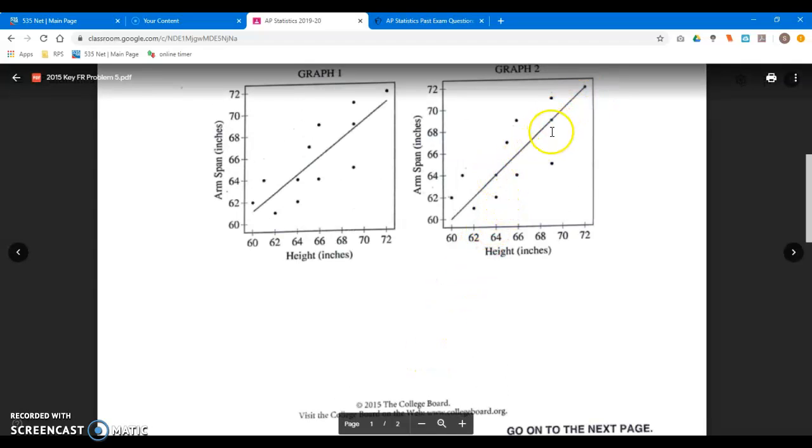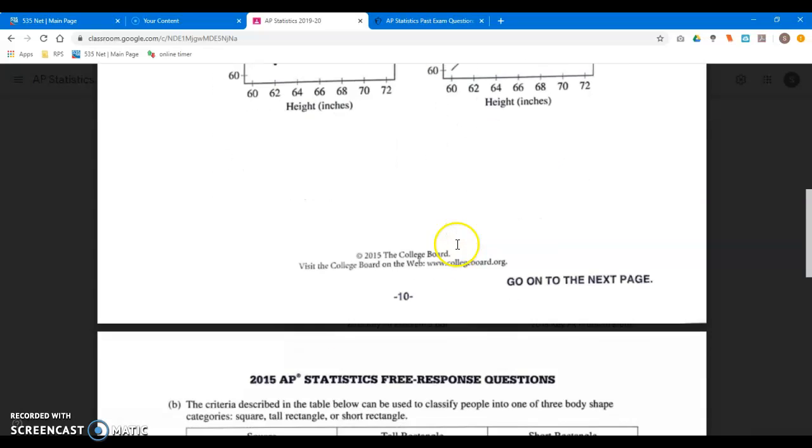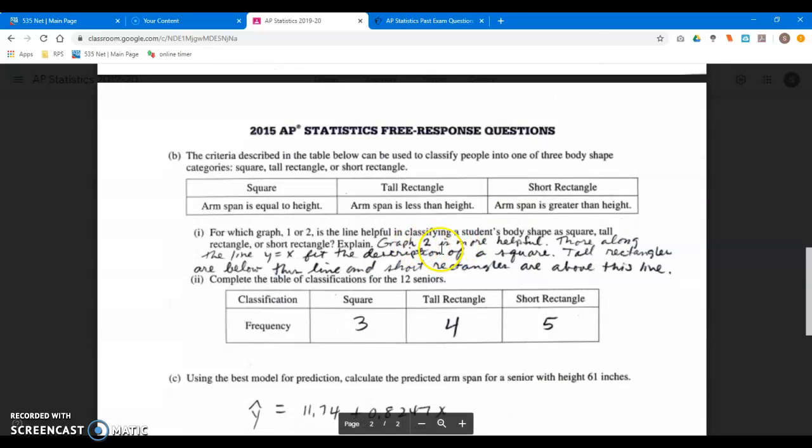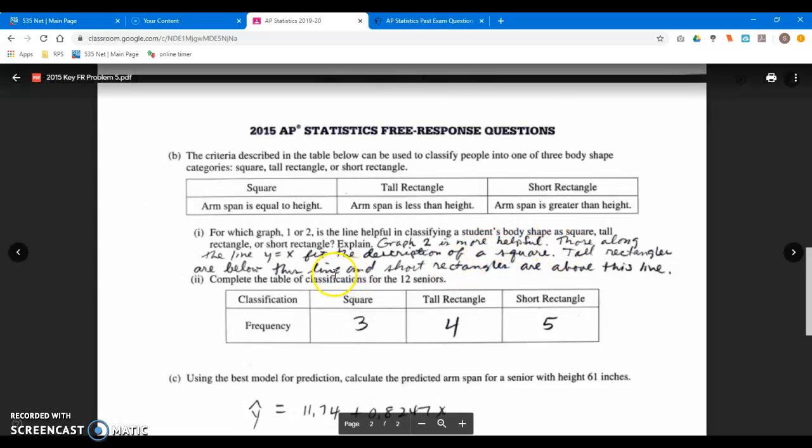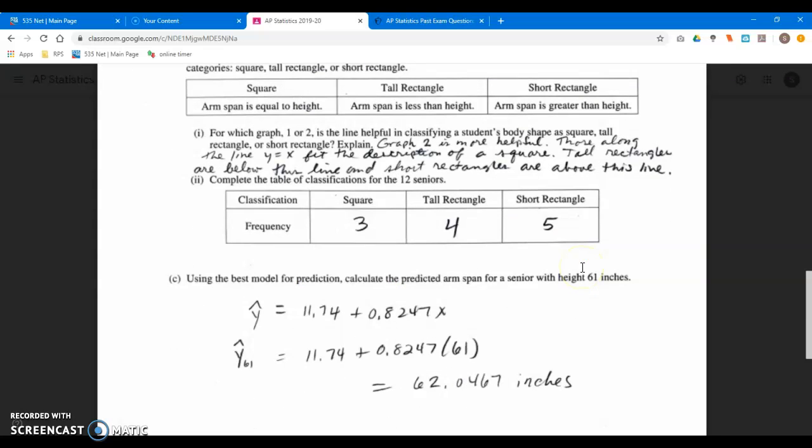And I was using graph two to describe it, because it provides that boundary. If you are on the line y equals x, where x is height and y is arm span, then you're a square. So graph two is the correct answer for number one. You have to do some explaining. I said those along the line y equals x fit the description of a square. All rectangles are below the line; short rectangles are above this line.